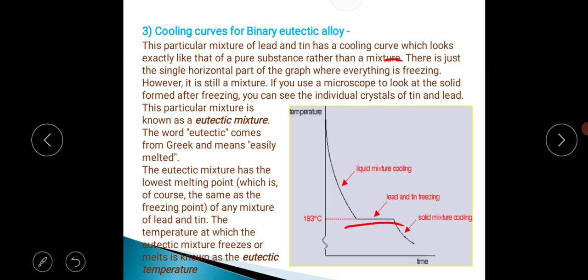If you use a microscope to look at the solid formed after freezing, you can see the individual crystals of tin and lead. This particular mixture is known as a eutectic mixture. The word eutectic comes from Greek meaning easily melted. The eutectic mixture has the lowest melting point of mixtures of tin and lead. The temperature at which the eutectic mixture freezes or melts is known as the eutectic temperature.